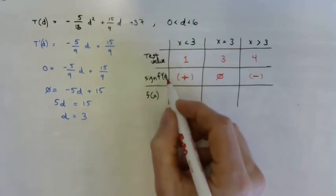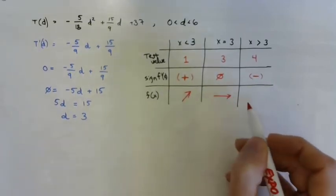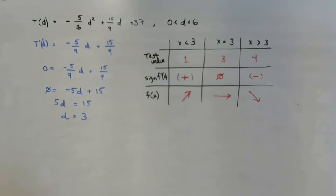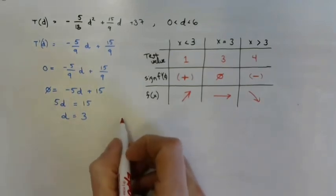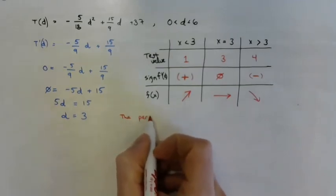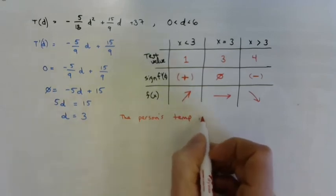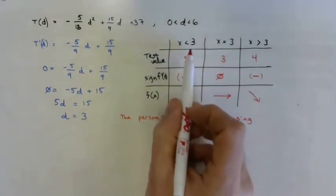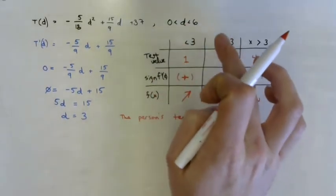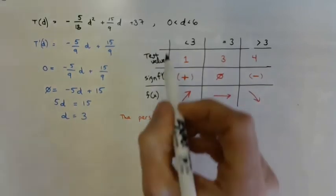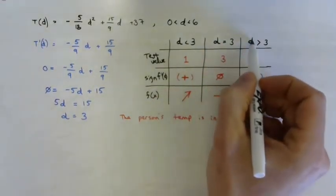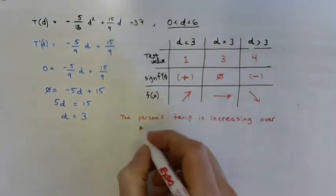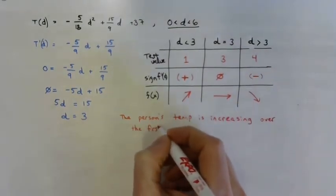If the derivative is positive, temperature is increasing. If zero, it's flat. If negative, it's decreasing. The question asked when the person's temperature is increasing — that's when D is less than 3. Since D represents days, the person's temperature is increasing over the first 3 days.